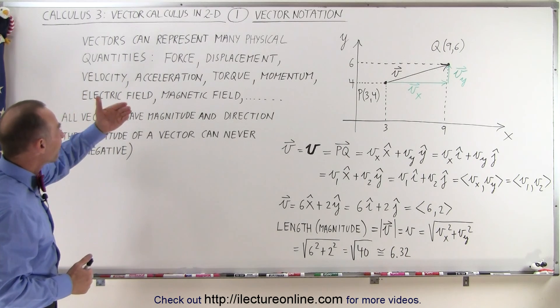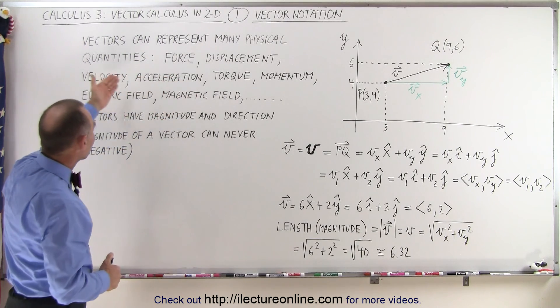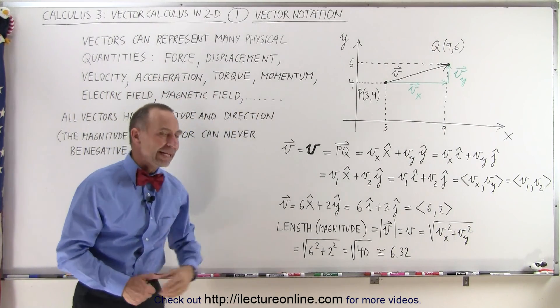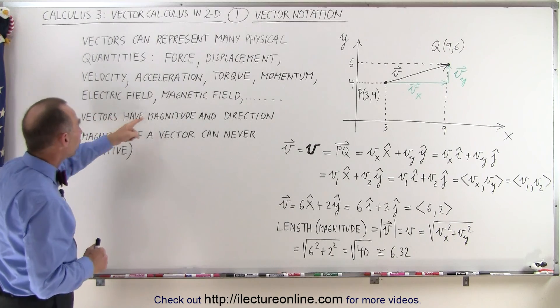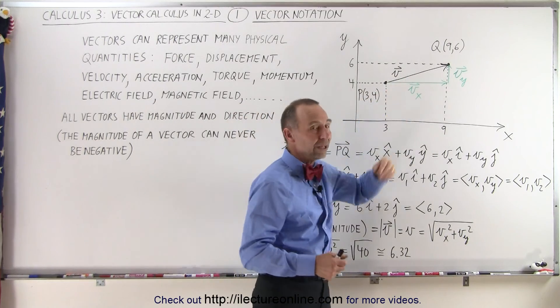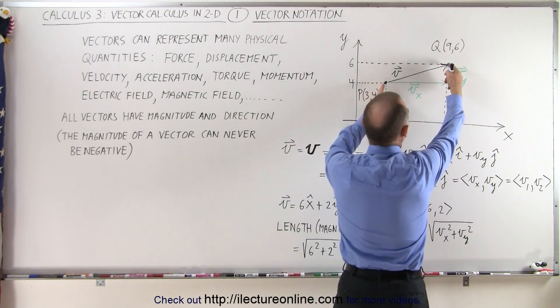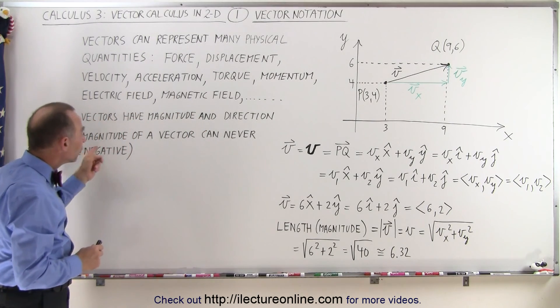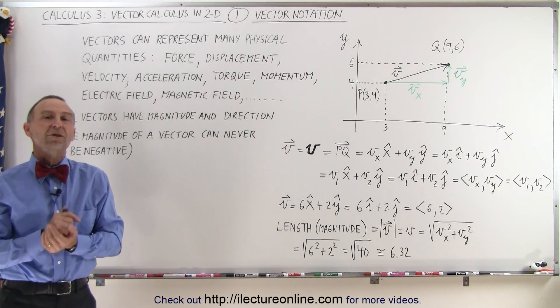Vectors represent physical quantities. Some examples include force, displacement, velocity, acceleration, torque, momentum, the electric field, the magnetic field, and many other things. That's why we need vectors - they have both magnitude and direction. The arrow here represents a vector. The direction of the arrow represents the direction of the vector, and the length represents the magnitude. Keep in mind that the magnitude of the vector can never be negative. Magnitudes can only be positive; only their direction can be negative.